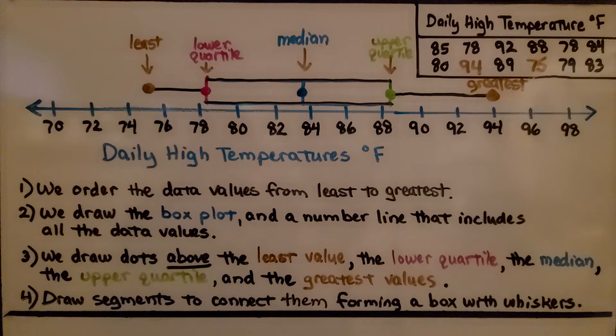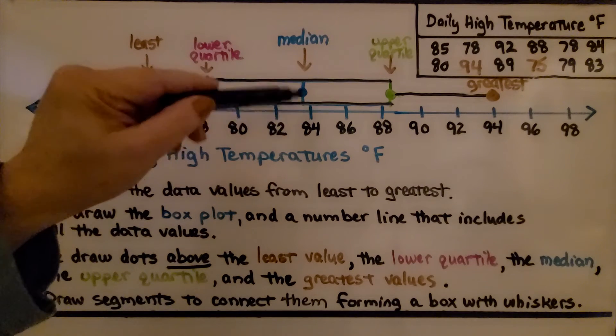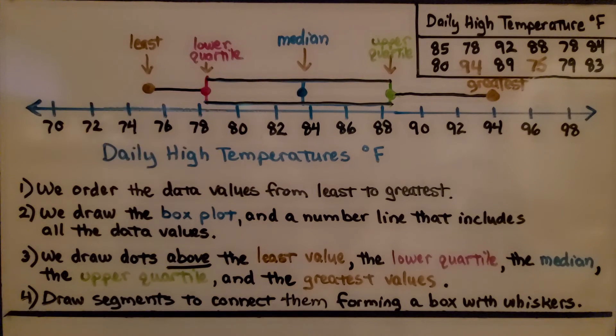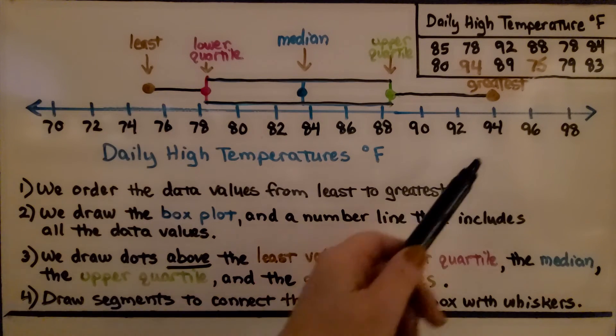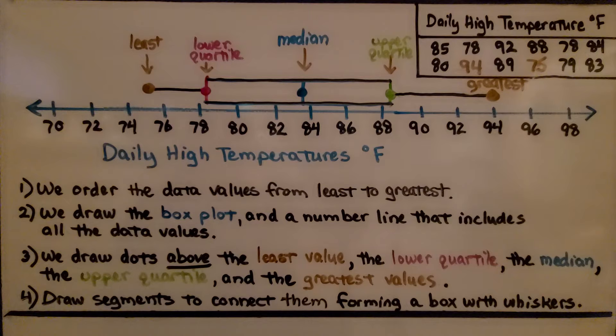The qualitative inferences we get from the data is the daily high temperature averaged around 84 degrees. And the daily high temperature ranged between 75 degrees and 94 degrees. And there's other qualitative inferences we can make from this box plot.